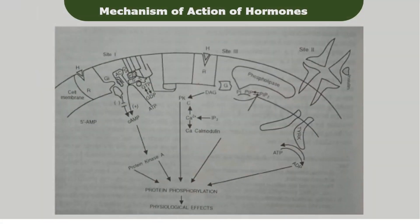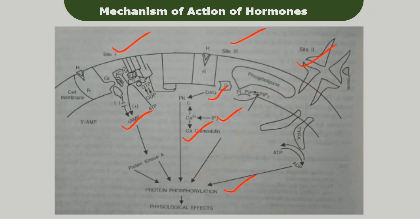This figure shows various sites of action of hormones on the cell membrane. Sites 1 and 3 are G-protein coupled receptors, while site 2 is a tyrosine kinase receptor. The various secondary messengers include cyclic AMP, diacylglycerol, inositol triphosphate, and calcium. These secondary messengers activate various enzymes like protein kinase, which phosphorylates proteins to produce physiological effects.